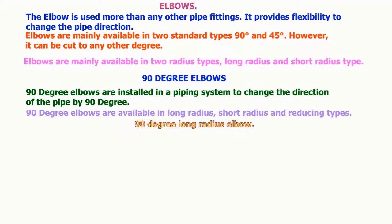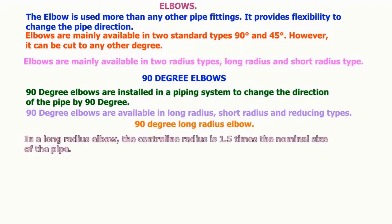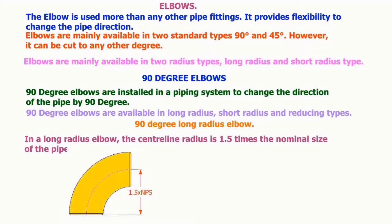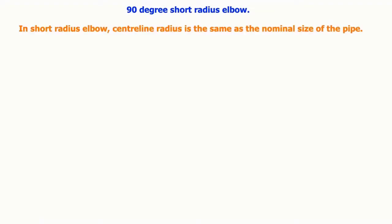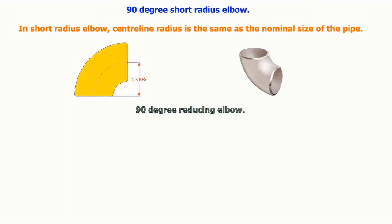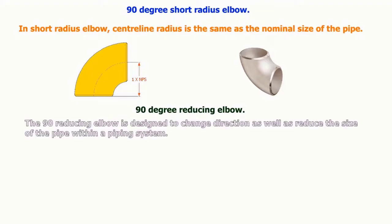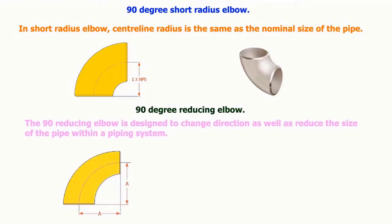In a long radius elbow, the centerline radius is 1.5 times the nominal size of the pipe. In short radius elbow, centerline radius is the same as the nominal size of the pipe. The 90 reducing elbow is designed to change direction as well as reduce the size of the pipe within a piping system.